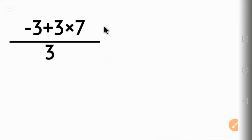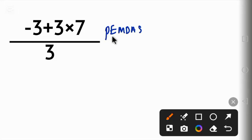Using the order of operation called PEMDAS, P stands for parentheses, E stands for exponent, M and D stands for multiplication and division, A and S stands for addition and subtraction.